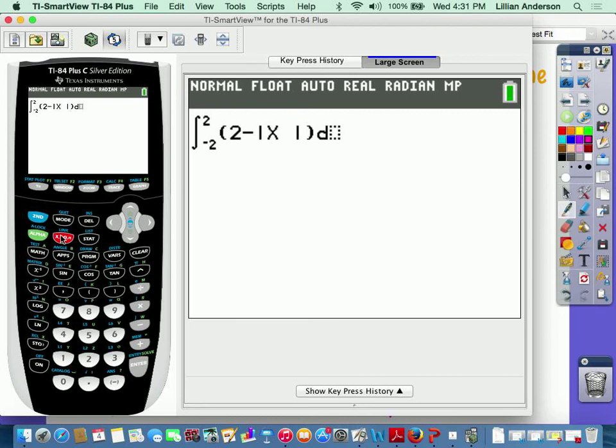So then you're going to type in the x, and then of course you're going to do the x there. And by doing this, this is going to basically tell us what the area is underneath the curve when we click enter, and it's 4.